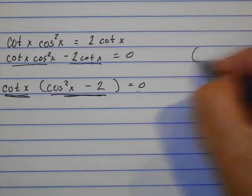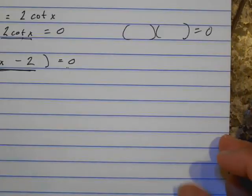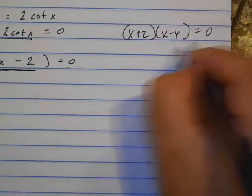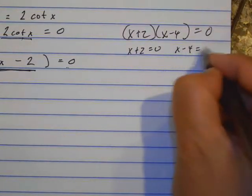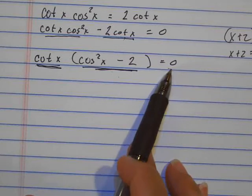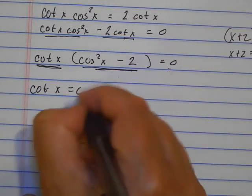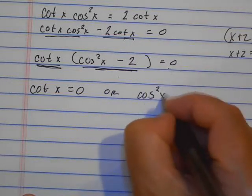Just like when we were factoring and the answer was 0, something like this. So let's say I had like x plus 2 and x minus 4, something like that. I would say x plus 2 equals 0, x minus 4 equals 0. So we have the same thing here. We have two things multiplied together, and the answer is 0. So that means that cotangent of x equals 0, or cosine squared of x equals 2.